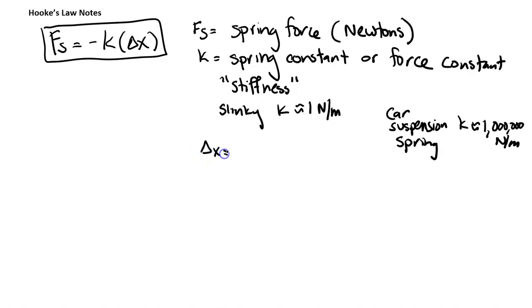Delta X is going to be our displacement of the spring, so how much the spring has shifted from equilibrium. And sometimes when you see Hooke's Law written, they'll just write it as KX instead of delta X, but know that it means how much it's been displaced from equilibrium.